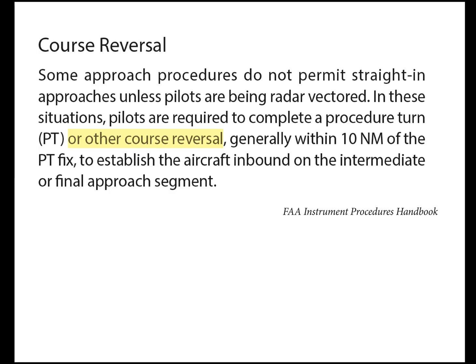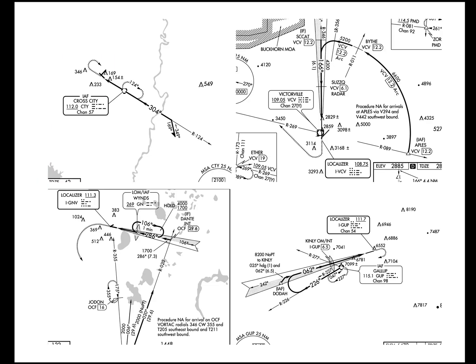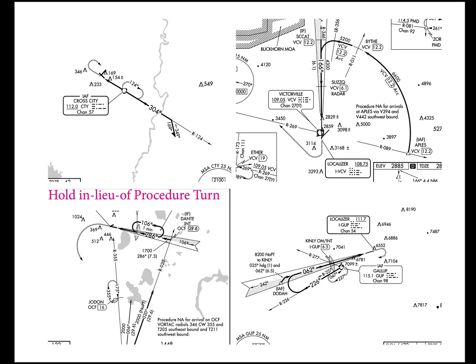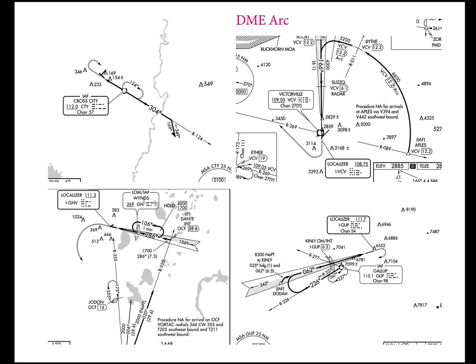You know what a course reversal is. You usually think of it as a procedure turn, but there are other kinds of course reversals. We have a procedure turn, a hold-in-lieu of a procedure turn, a DME arc, and the teardrop. That's the focus of what we're going to talk about today.